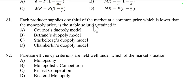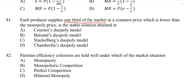Question 81: Each producer supplies one third of the market at a common price which is lower than the monopoly price. Which stable solution is this — Cournot, Bertrand, Stackelberg, or Sweezy duopoly model? This describes the Cournot duopoly model, which states that each producer supplies one third of the market at a common price lower than the monopoly price. Option A is correct.